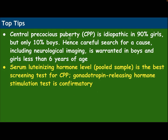Top tips: Central precocious puberty is idiopathic in 90% of girls but only 10% in boys. Hence, careful search for a cause including neurological imaging is warranted in boys and girls less than 6 years of age. Serum luteinizing hormone level from a pooled sample is the best screening test for central precocious puberty. Gonadotropin-releasing hormone stimulation test is confirmatory.